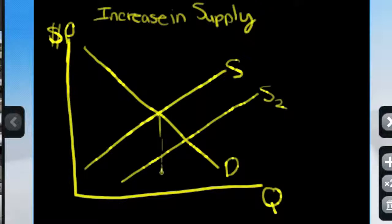So the original quantity is Q1. The original price is P1. We can label this S1 and D1 just to be most clear.